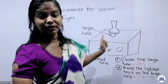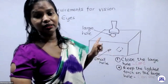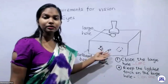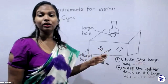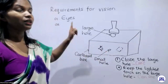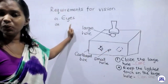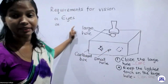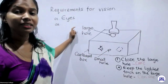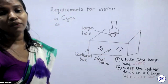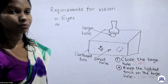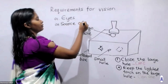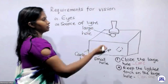When you come to the next step — when you have kept the lighted torch on the large hole to observe the eraser — you will see that by using the light of the torch, this time you are able to see your eraser. In the second situation, you could see the eraser inside the box just because you lighted the place. So not only your eyes matter — even though your eyes are present, there was no use without light.